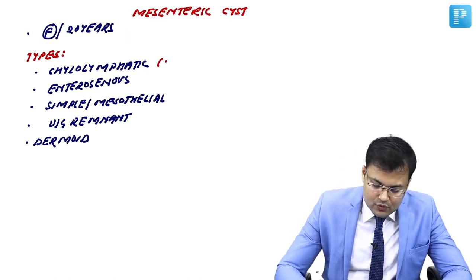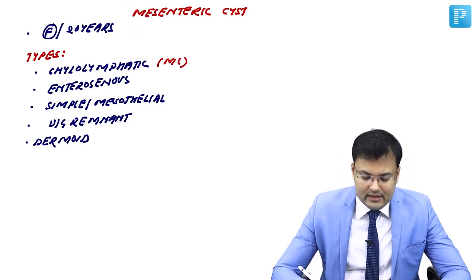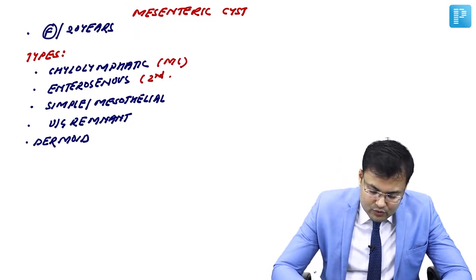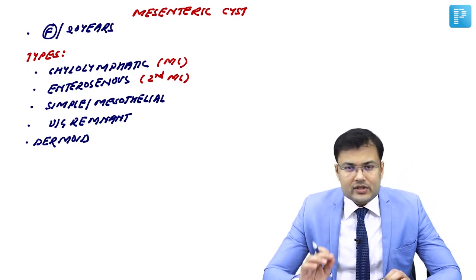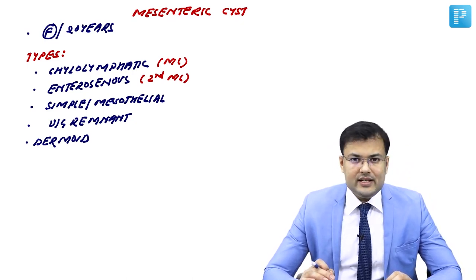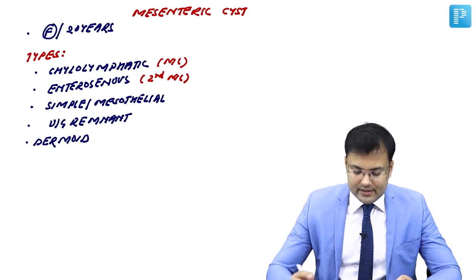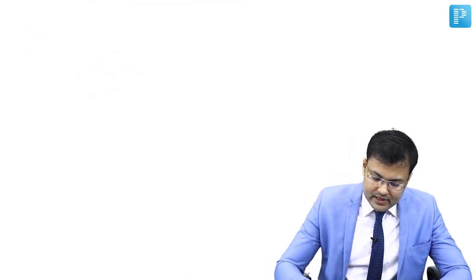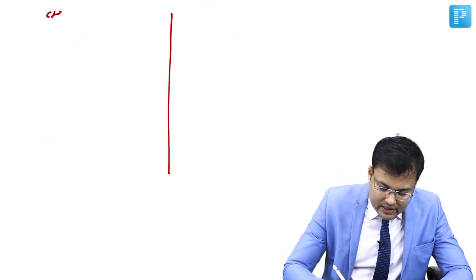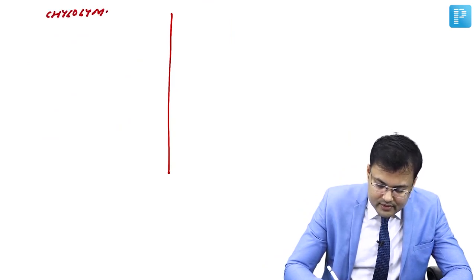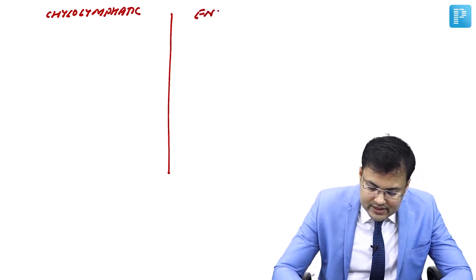So the key exam points: first most common is chylo-lymphatic, and second most common is enterogenous. We are going to discuss these two cysts in detail — see the differences. First is chylo-lymphatic, and the second is enterogenous.